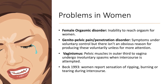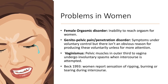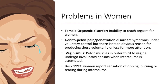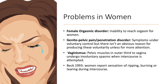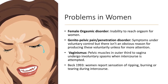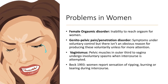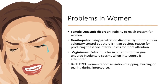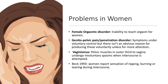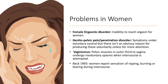Genital pelvic pain or penetration disorder involves difficulties with penetration during attempted intercourse with significant pain. Vaginismus is whereby a pelvic muscle in the outer third of the vagina undergoes involuntary spasms when intercourse is attempted. Beck in 1993 stated that women report sensations of ripping, burning, or tearing during intercourse — very painful and discouraging for women with this disorder.